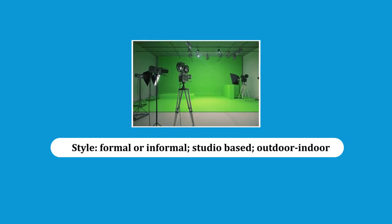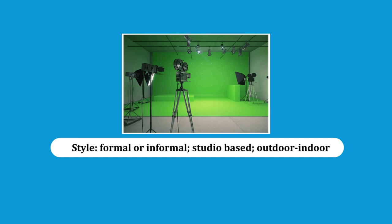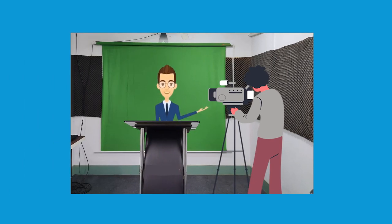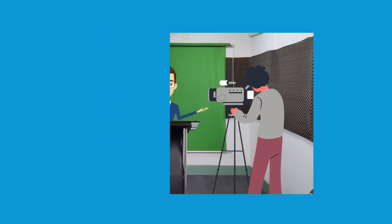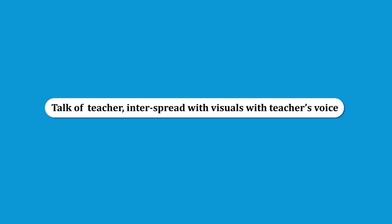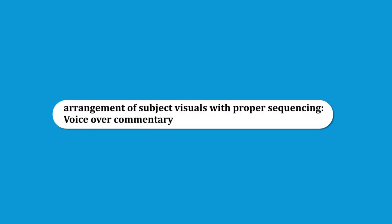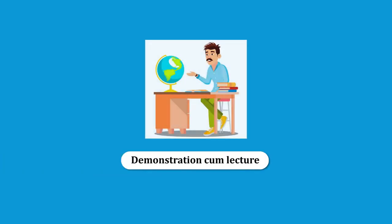The style should also be decided — whether formal or informal, studio-based, outdoor, or indoor — all depending on the content and audience. There are many formats of e-tutorial in the educational sector. It could be a narrative where a teacher talks like a lecture, which is very prominent and is one of the main formats in SWAYAM. Then there is the teacher's talk interspersed with visuals with voiceover, so there is continuity as the teacher talks and visuals are there for concept clarification.